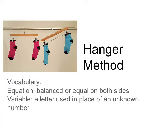In this video we're going to learn the hanger method for solving equations. For vocabulary, write down two things: first, an equation is when something is balanced or equal on both sides, and a variable is a letter used in place of an unknown number.